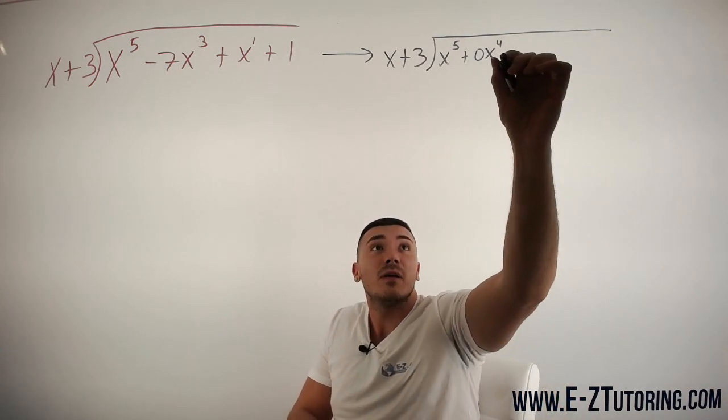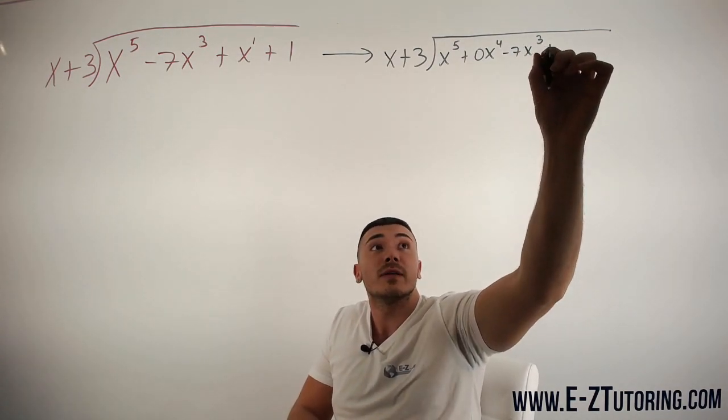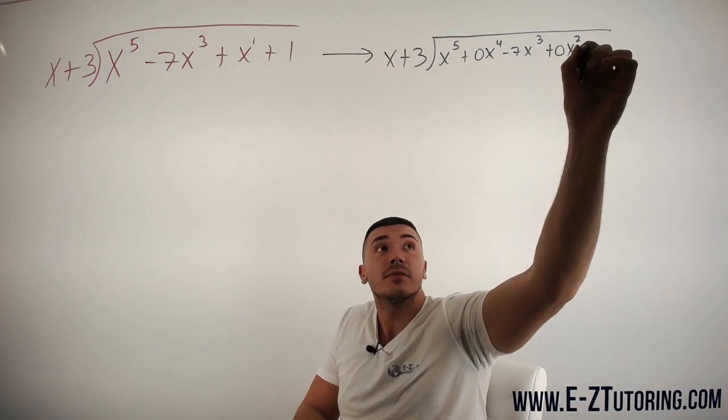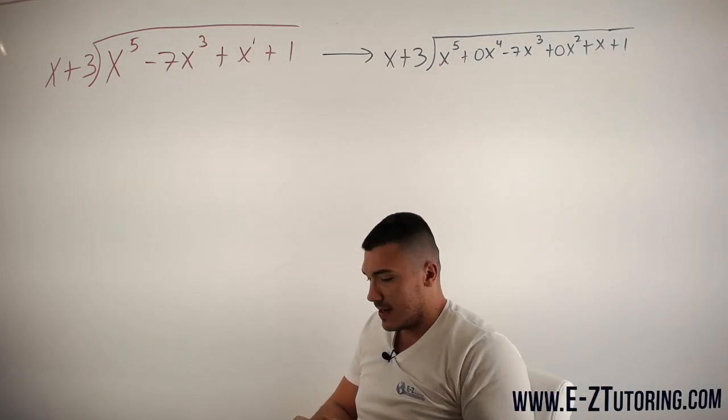And then we have minus 7x cubed. Now we have no x squared, so I'm going to say plus 0x squared plus x plus 1, and now we can begin our division.